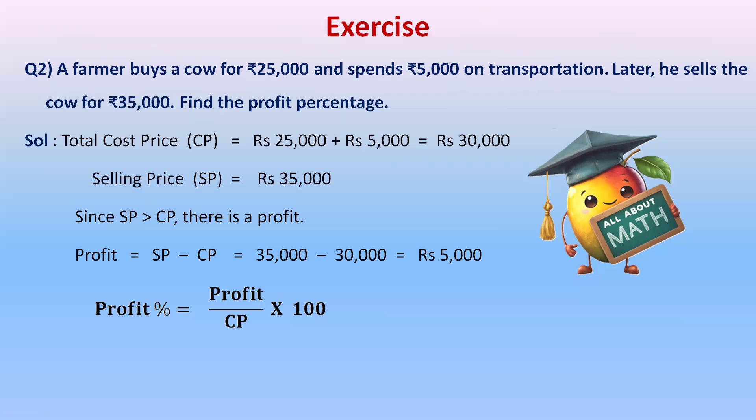The profit is the difference: 35,000 minus 30,000 = 5,000 rupees. Using the profit percentage formula — profit upon CP multiplied by 100 — we get 5,000 upon 30,000 multiplied by 100. Cancelling zeros, we have 50 upon 3, which gives 16.66 percent.